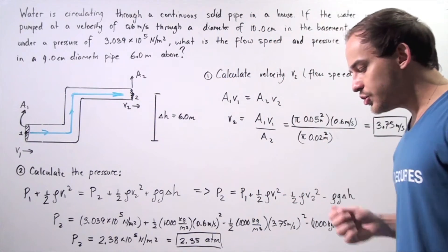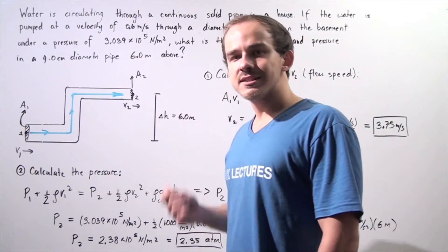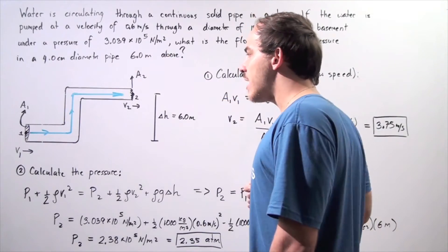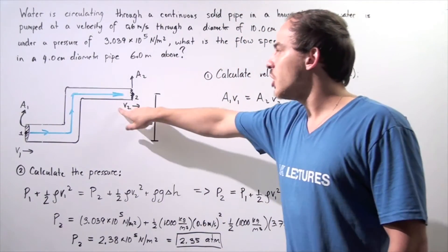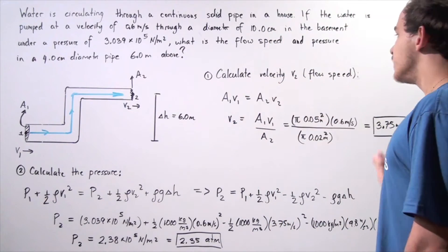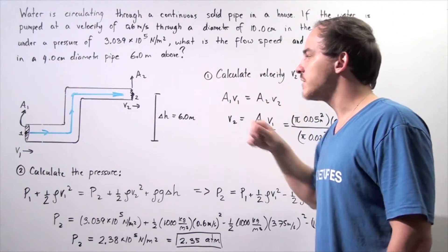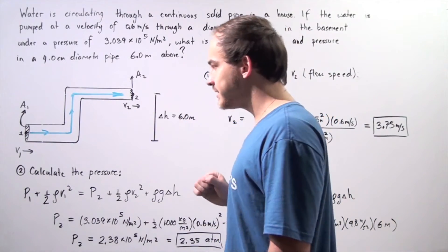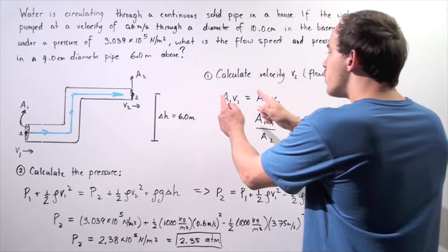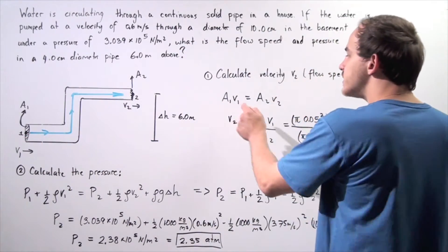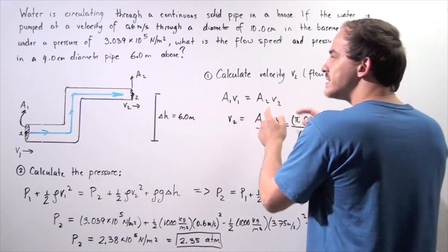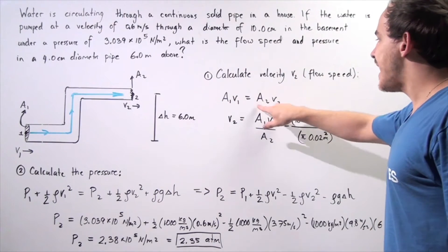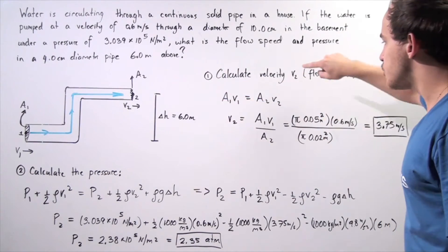In the first step, we're going to use the equation of continuity to solve for velocity V2. To find the pressure 6 meters above the basement, we first have to calculate flow speed V2. The equation of continuity states that the volume flow rate at any given point in a continuous pipe is exactly the same. So A1 times V1 equals A2 times V2. Since we know A1, A2, and V1, we can solve this equation for V2.